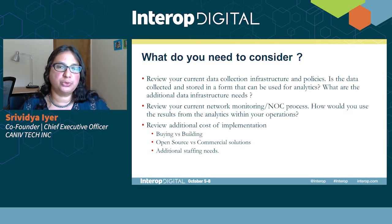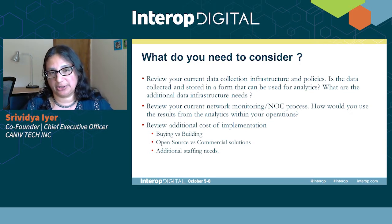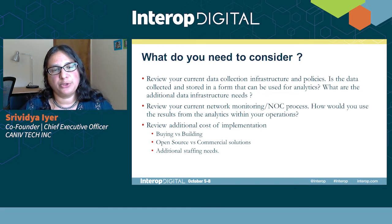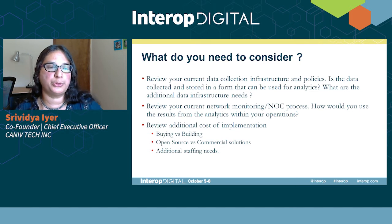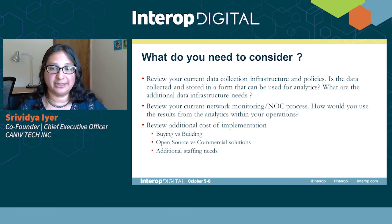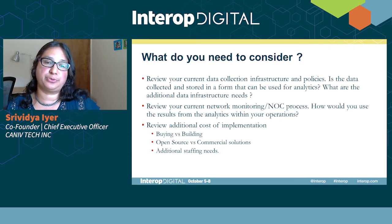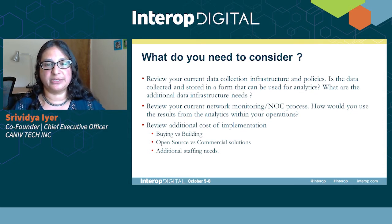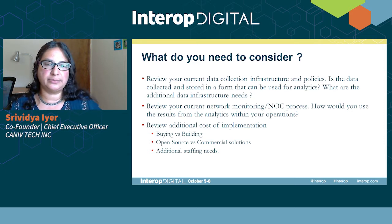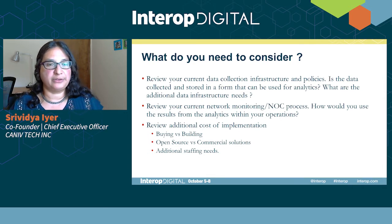Once you do these two things, you'll get a pretty good idea of what additional data infrastructure you need. The next important thing is to review your current network monitoring process and see how you can use the results from analytics within your operations. It's great that you implemented data analytics and machine learning, but if you cannot use those results within your existing network monitoring processes, it's pretty useless — it becomes siloed, with monitoring people and analytics people not really talking to each other.